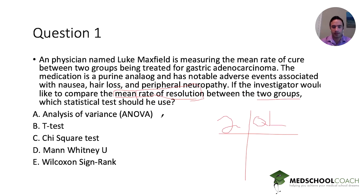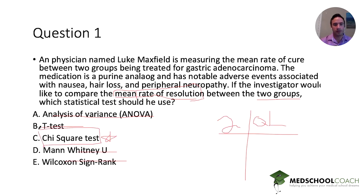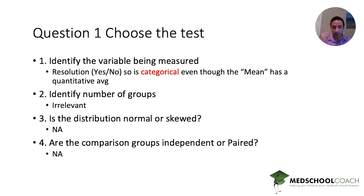Let's plug this into each answer choice. The ANOVA test requires greater than or equal to three groups with quantitative data — it fails on both counts. The t-test can be used for two groups but requires quantitative data. The chi-squared test can be used for at least two groups and is used for qualitative or categorical data — that sounds right. The Mann-Whitney U is quantitative data, and the Wilcoxon signed-rank test is also quantitative data, those differing on whether the groups are independent or paired. So our answer is the chi-squared test.